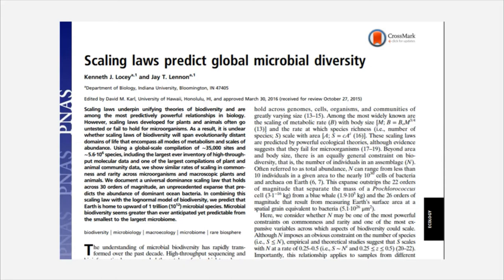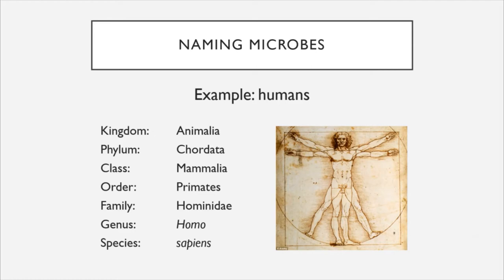With all those microbes out there in the world, there has to be a system for being able to recognize them, identify them, and name them so that they can all be kept straight. This system is called taxonomy. Taxonomy is a system for classifying living organisms, starting with broad categories and putting them in increasingly specific categories until you arrive at a specific name of the organism. This taxonomic system is used not just for microbes, but for all living organisms. Let's look at the example of humans to see how it works.